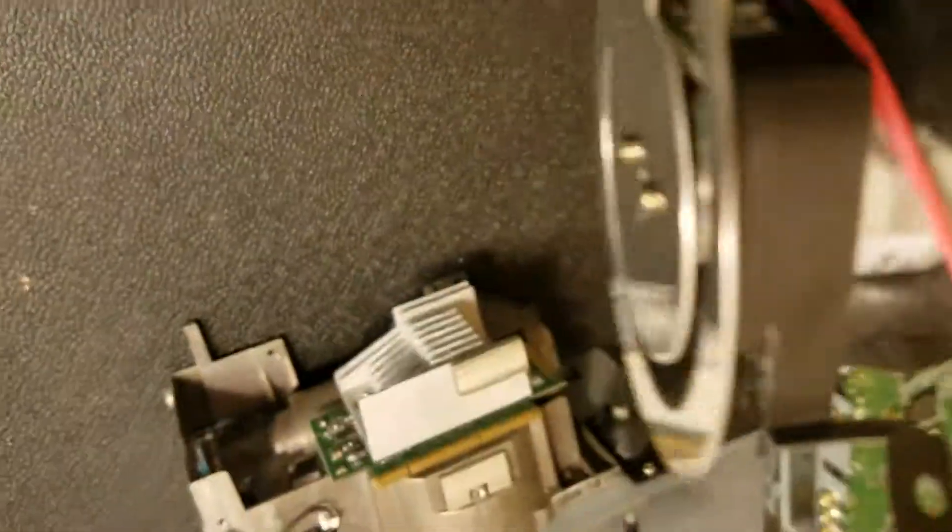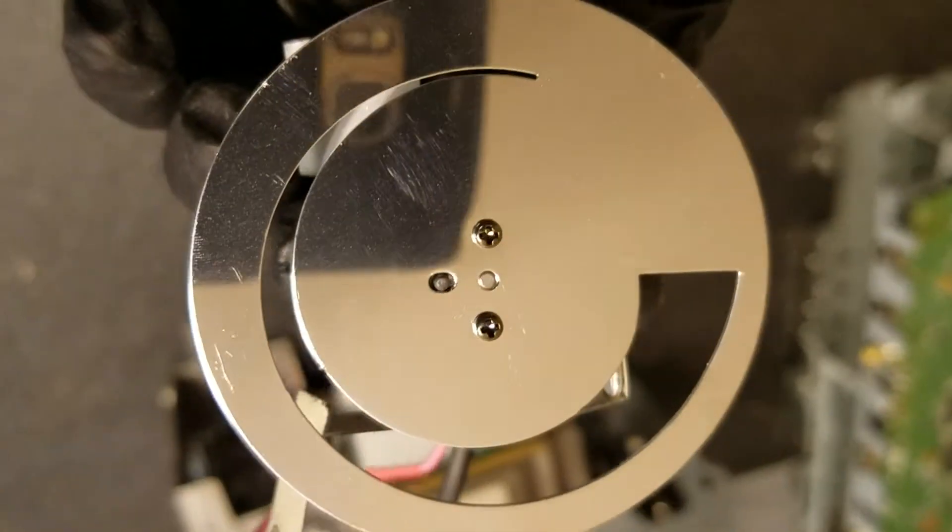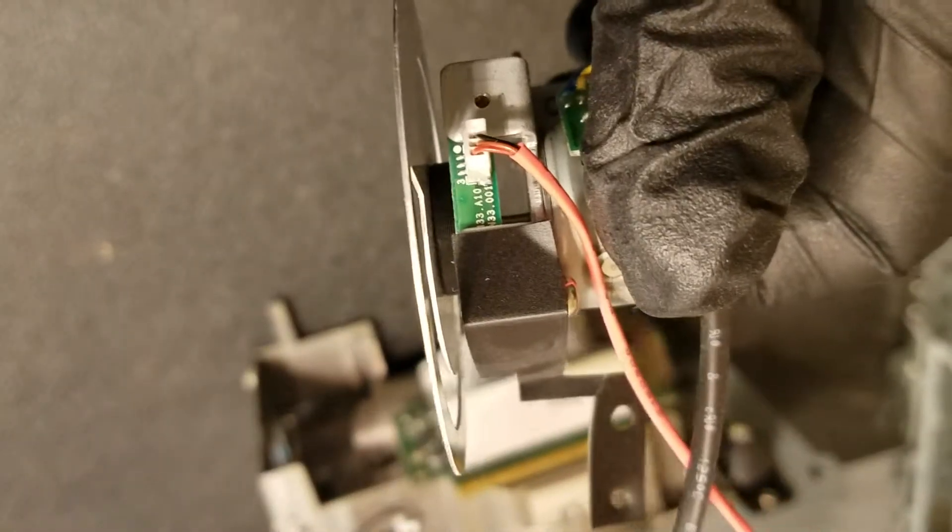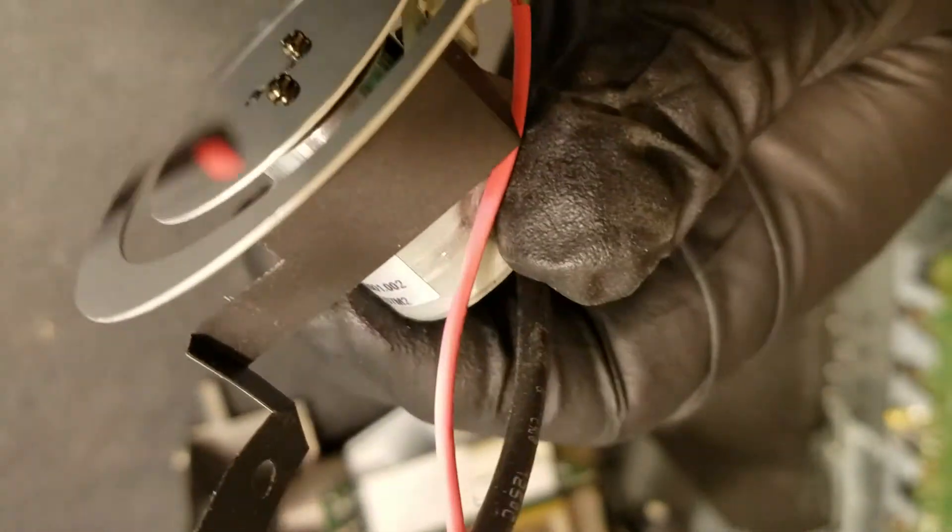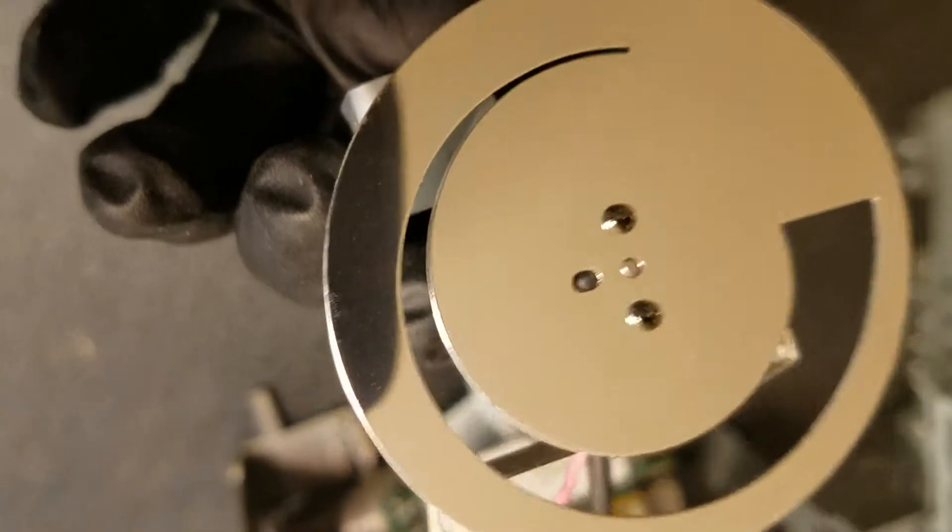So I'm going to carefully take those screws out. If this gets bent at all and out of flat, that's no good. So I'm going to carefully take those screws off and then check the wheel hub, make sure the motor feels good.